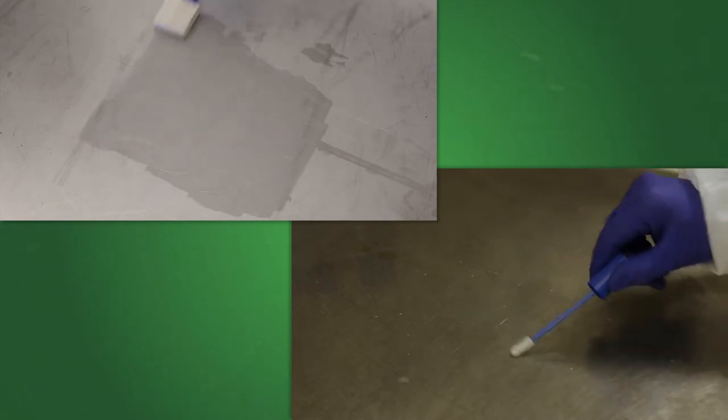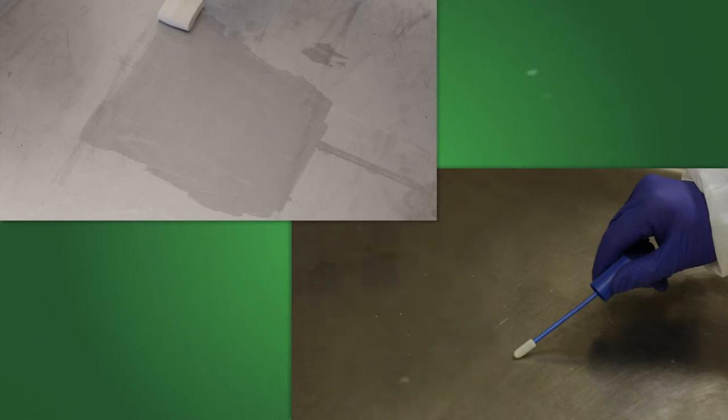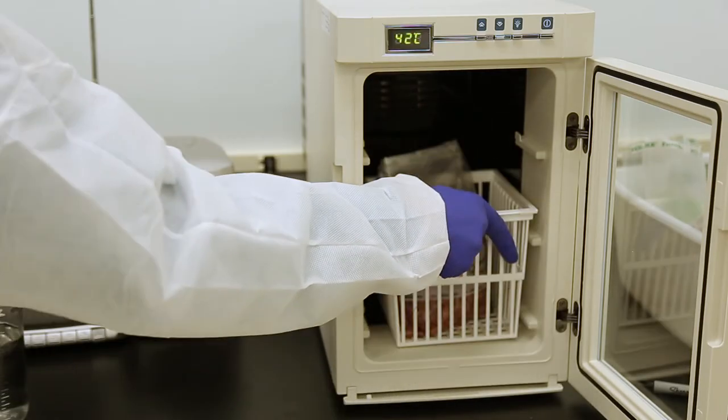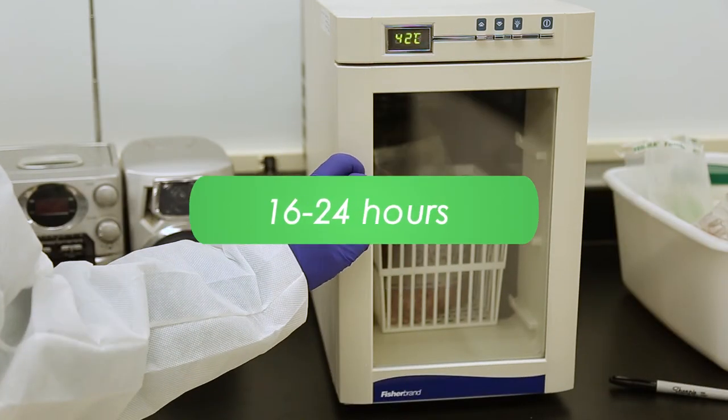For sponges, 100 milliliters of media is recommended. For swabs, 10 milliliters of media is recommended. These should be incubated at 42 degrees Celsius plus or minus one degree for 16 to 24 hours.